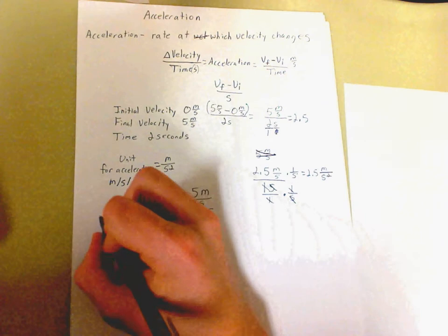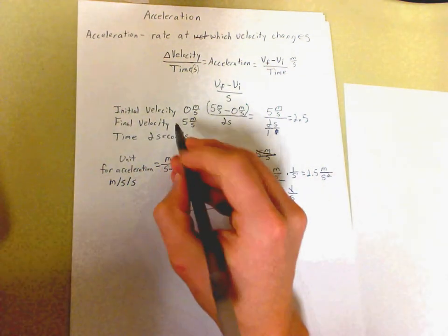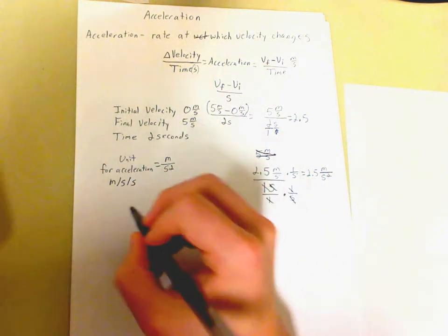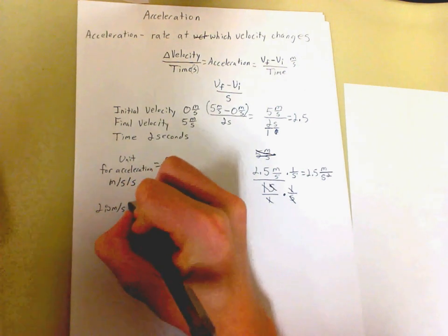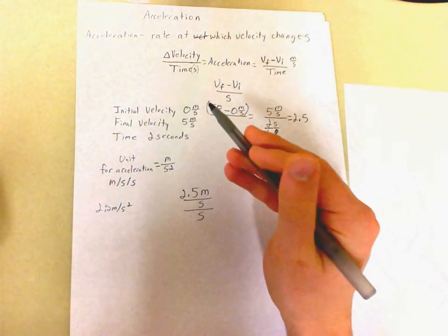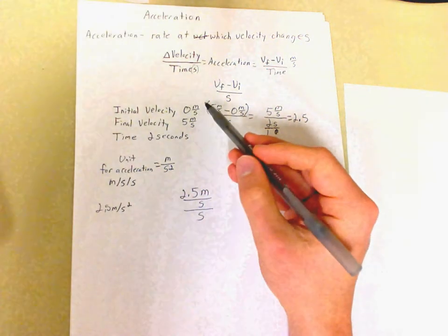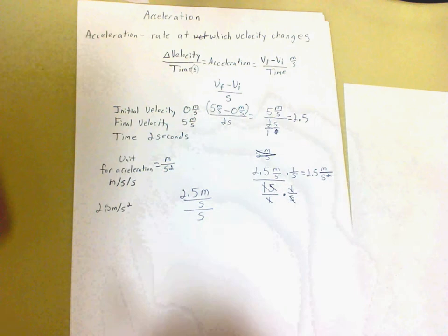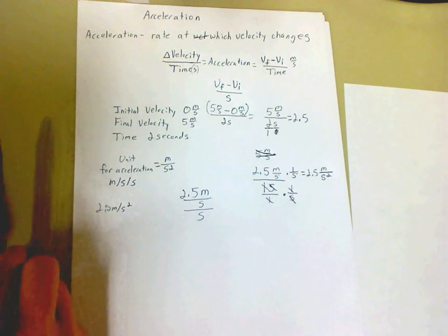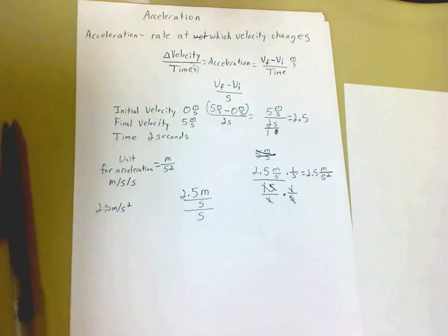And so our answer for this problem back up here is 2.5 meters per second squared. That is our acceleration for this guy that started from a complete stop and got up to 5 meters per second. That is how you work an acceleration problem. You'll need to know the formula for that, so I suggest you learn that. And in our next video, we will talk about how to graph acceleration.